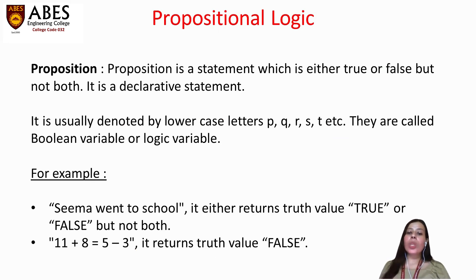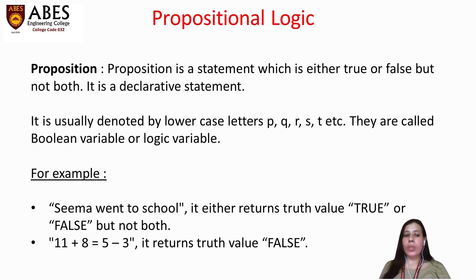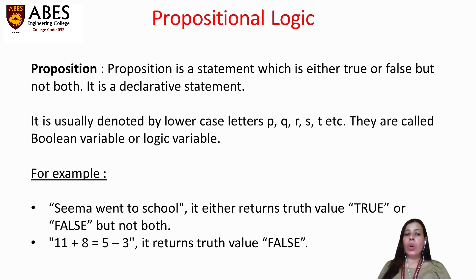They are called boolean variables or logical variables because they hold two values, either true or false, that is zero or one. For example, 'Sima went to school' returns either the value true or false — either Sima went to school or she did not. It cannot hold both values.